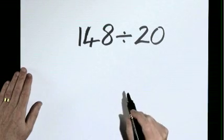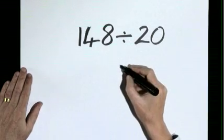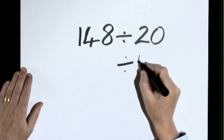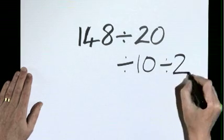148 divide by 20. Instead of dividing by 20, we can divide by 10 and then divide by 2. It's the same answer.